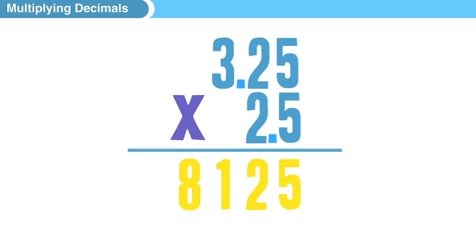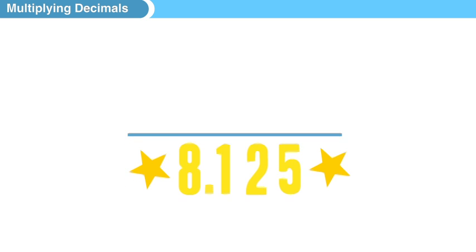So what we're going to do is in our final answer, we want to make sure that it has three numbers to the right of the decimal, or the exact same number of digits to the right of the decimal that were to the right of the decimal in our original two numbers. So our answer is 8.125.